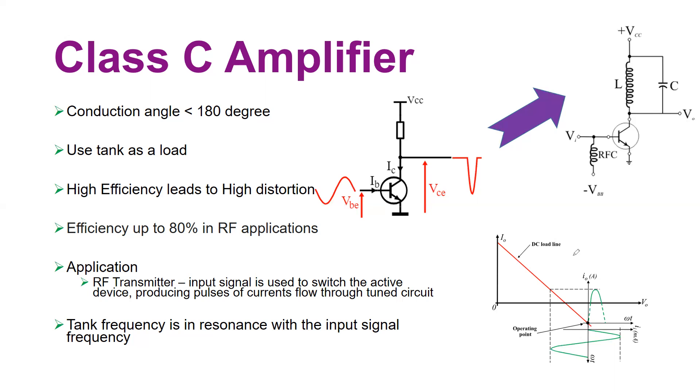Hope you understood the basic concept of Class C amplifier, which finds its application in radio transmitter and receiver for RF communication, where you basically use quasi-switching action of the transistor.